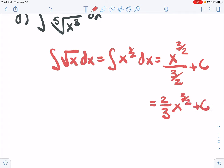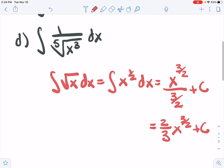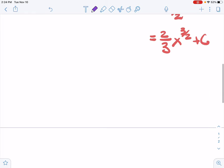1 over 3 halves is 2 thirds. And then finally, we have 1 over the 5th root of x cubed. So 1 over the 5th root of x cubed.